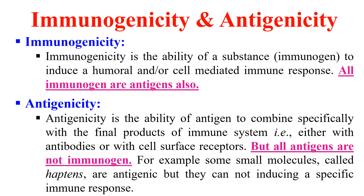The second term is antigenicity. In contrast to immunogenicity, antigenicity is the ability of an antigen to interact with immune cells, but it is not able to activate the immune system — meaning the antigen is weak. It can only interact with immune cells, but after interaction there will be no immune response. That power is known as antigenicity.